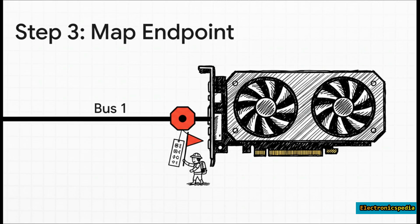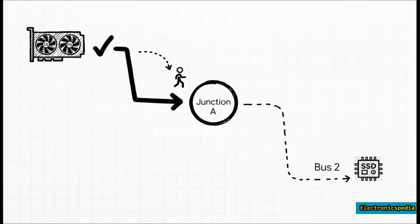So the explorer gives it a unique address on this new bus—something like Bus 1, Device 0, Function 0. It then reads all the card's info to figure out what it is and what it needs. And with that, this path is now fully mapped.